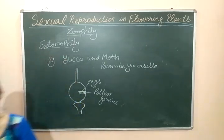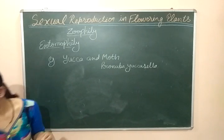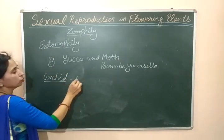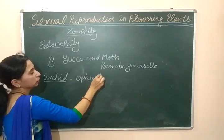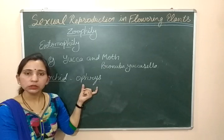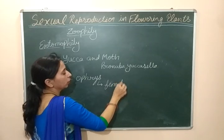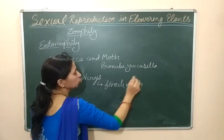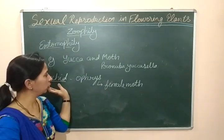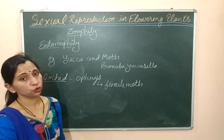Now we will discuss one more important example related with entomophily. This is the example of the orchid Ophrys. In the case of this orchid, it forms a flower which resembles a female moth. This flower shows the appearance of a female moth, which helps in attracting male moths. This type of process is also known as pseudocopulation.